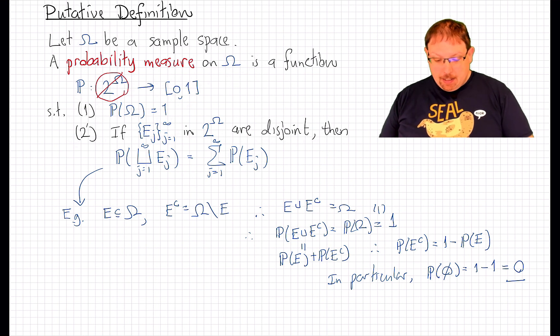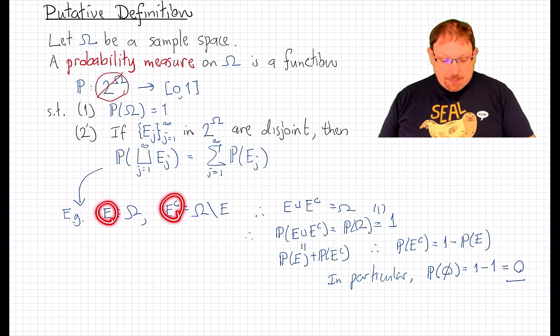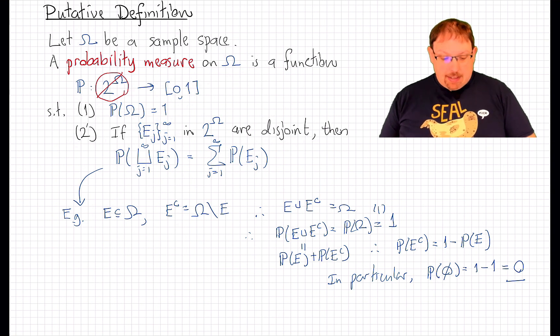It had better contain the complement of the sample space. It had better contain the complement of any set that's in it. So it must be closed under complement. And it had better be closed under taking unions in order for us to do any of these calculations.